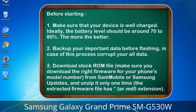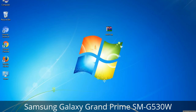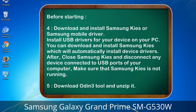3. Download the stock ROM file. Make sure you download the right firmware for your phone's model number from Sammobile or Samsung Updates, and unzip it only one time. The extracted firmware file has a *.tar.md5 extension. 4. Download and install Samsung KIES or Samsung mobile driver. Install USB drivers for your device on your PC. You can download and install Samsung KIES, which will automatically install device drivers.